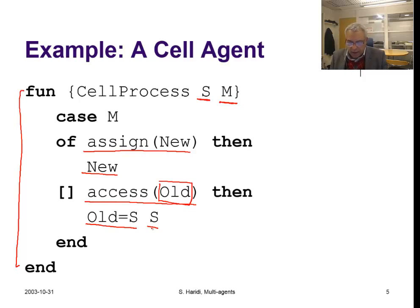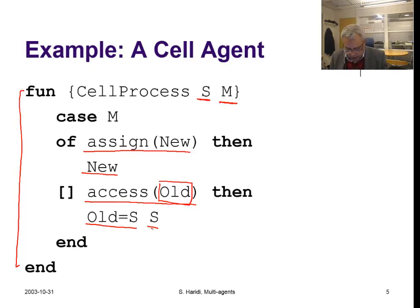So this is a function that describes a state transition. Now we want to use this function inside an agent, and by doing that we are going to be able to model an agent with state.